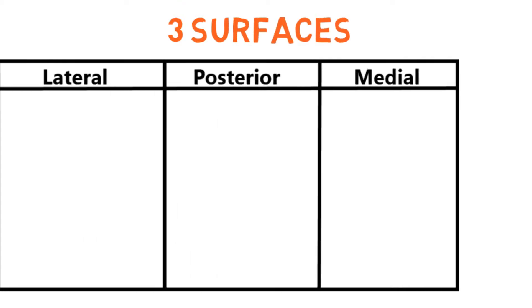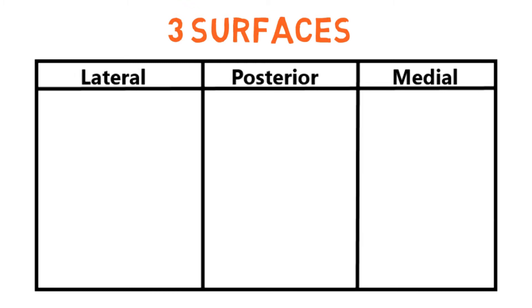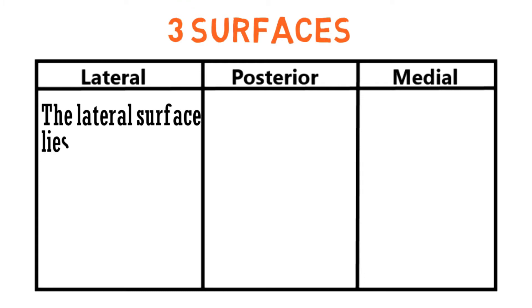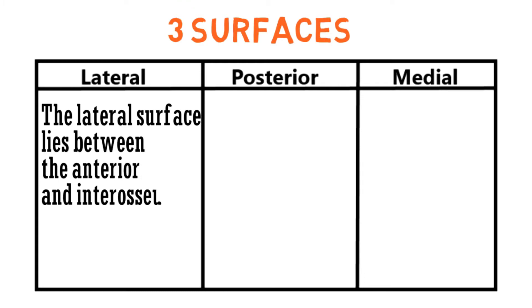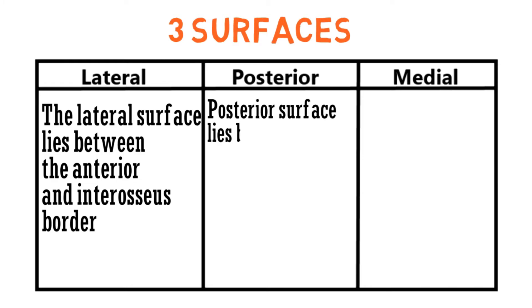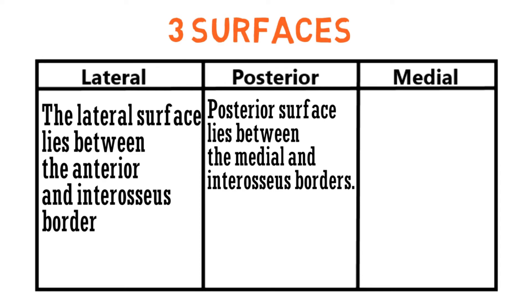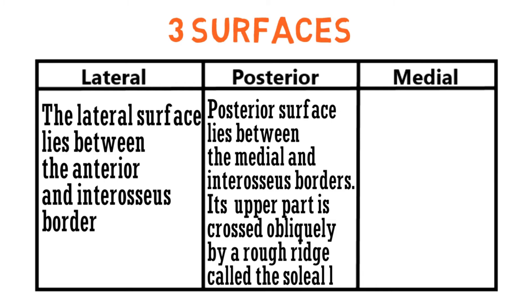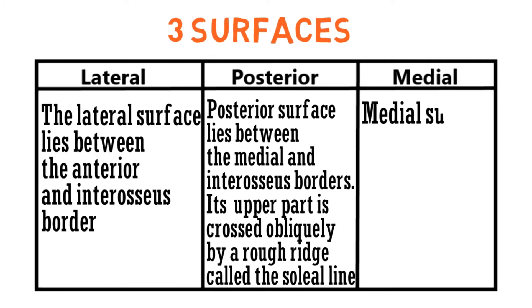There are three surfaces: the lateral, posterior, and medial surface. The lateral surface lies between the anterior and the interosseous borders. The posterior surface lies between the medial and the interosseous borders; its upper part is crossed obliquely by a rough ridge called the soleal line. The medial surface lies between the anterior and medial borders.